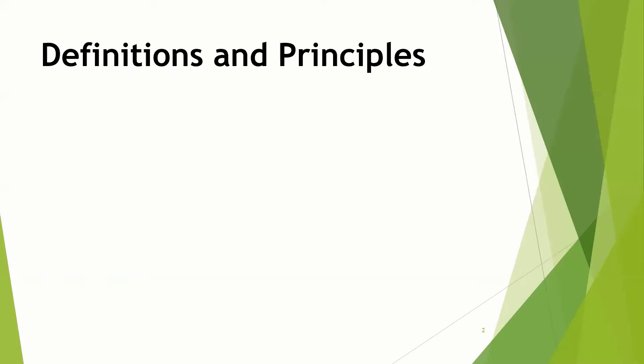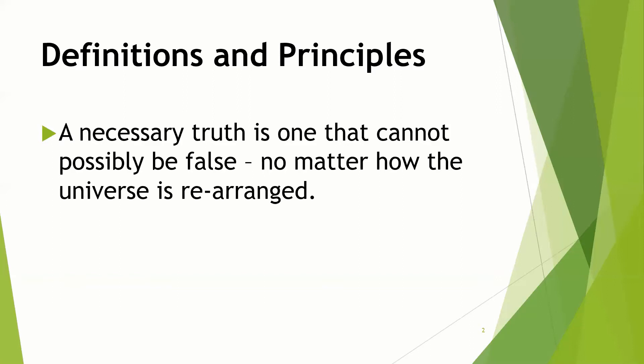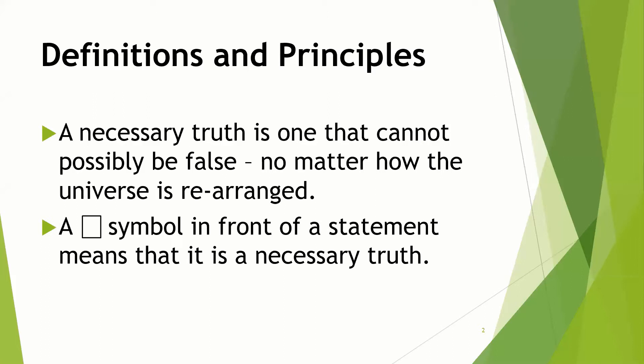Let's start by adding some definitions and principles. If you're not familiar with modal logic notation, this is a quick overview of what's needed for understanding the argument. A necessary truth is one that cannot possibly be false — it has to be true, and no matter how the universe is rearranged, it is going to be true. We identify these with the box symbol in front of a statement, so when you see the box, that means what follows is a necessary truth.